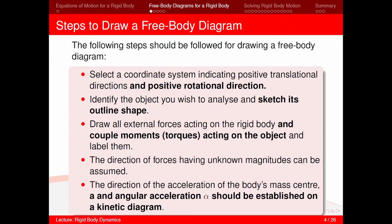Next, we need to determine the steps to follow to draw a free body diagram for a rigid body. First, we need to select the coordinate system, which will indicate positive translational directions as well as positive rotational direction. We then identify the object we wish to analyze and sketch its outline shape. Next, we draw all external forces acting on the rigid body and couple moments or torques acting on the object and label them accordingly. The direction of forces having unknown magnitudes can be assumed, as their direction will be determined when we solve the problem.